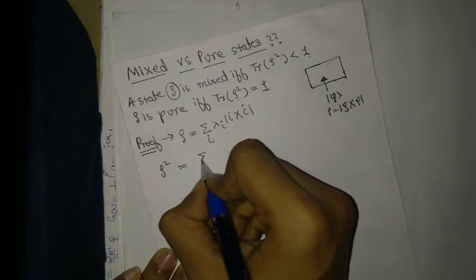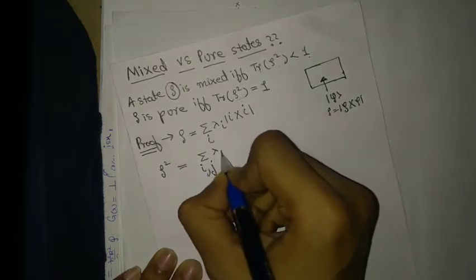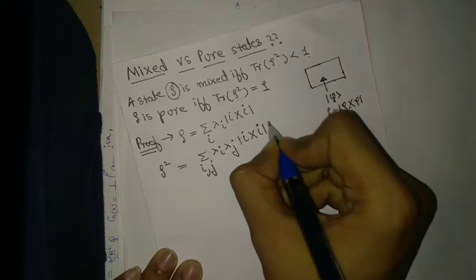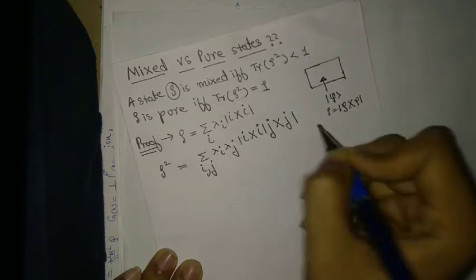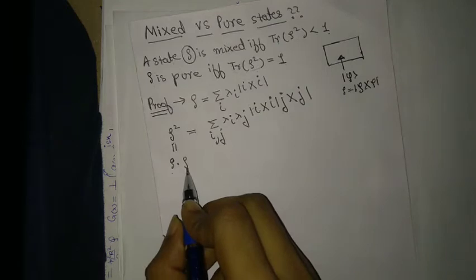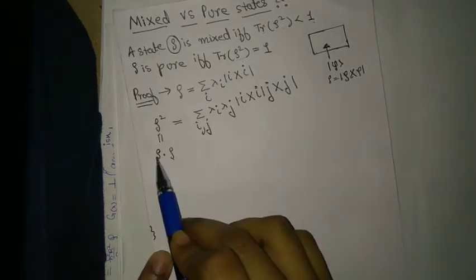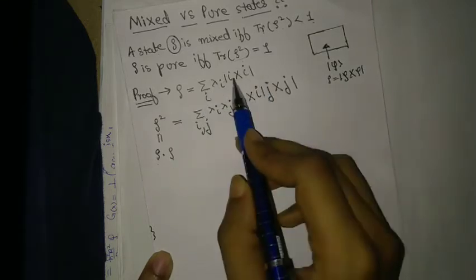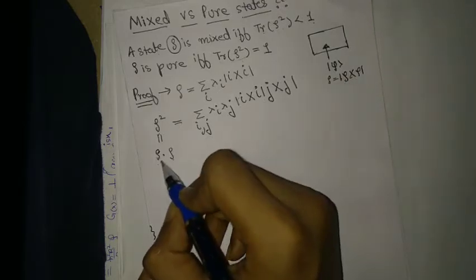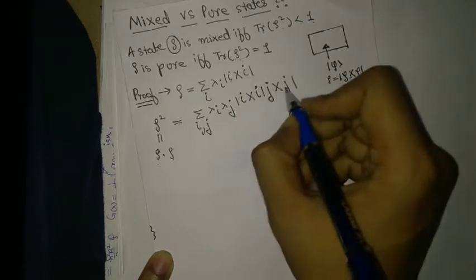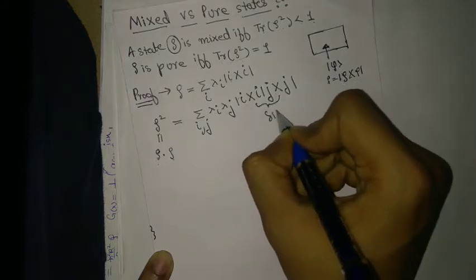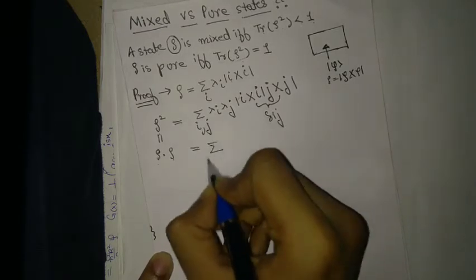ρ² is the summation over i, j of λᵢ λⱼ |i⟩⟨i|j⟩⟨j|. This is ρ times ρ, where I have expressed both factors in the same basis. Now we have a delta δᵢⱼ from the inner product ⟨i|j⟩, so let's take that into account.